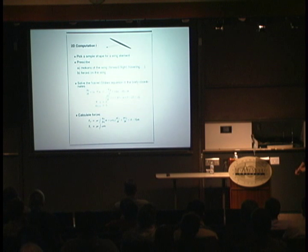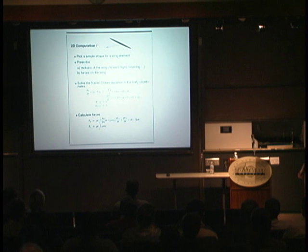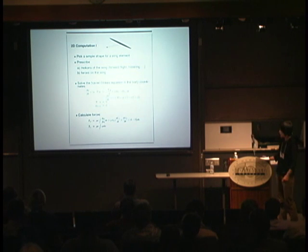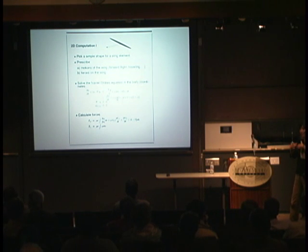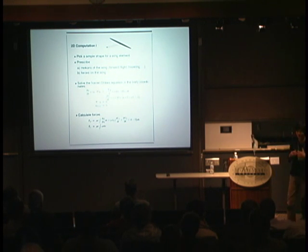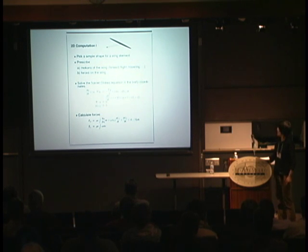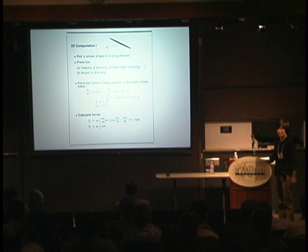We either prescribe the motion as observed in the field, or we can imagine driving this wing by prescribing a force. Then we solve the Navier-Stokes equation. In a non-inertial co-moving frame — don't worry about those terms — Navier-Stokes essentially says F equals ma: fluid momentum is conserved. We assume incompressible fluid dynamics, since the velocity is about one meter per second.